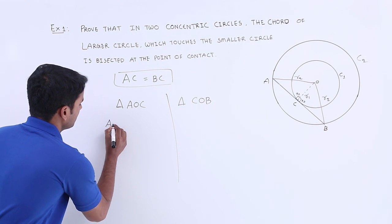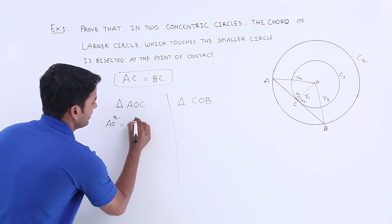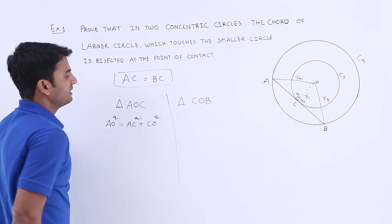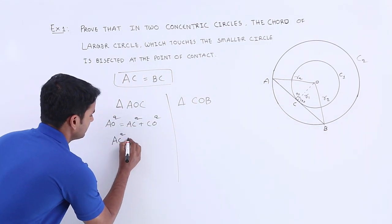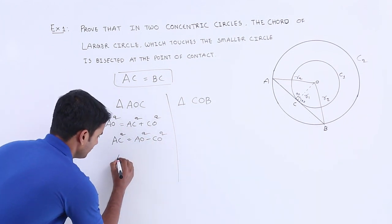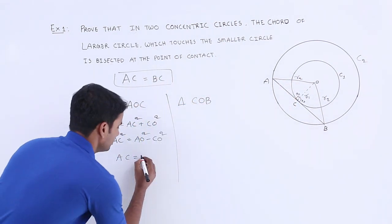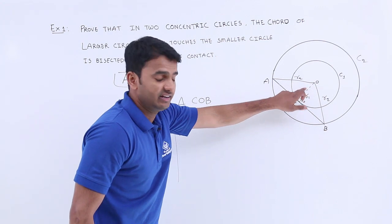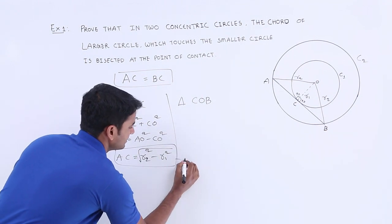Based on the Pythagorean theorem applied to triangle AOC, we can write: AO² = AC² + CO². Rearranging to find AC: AC² = AO² − CO², which is r2² − r1². Let us consider this as equation number one.